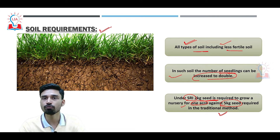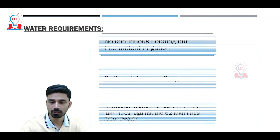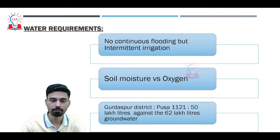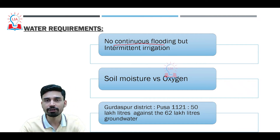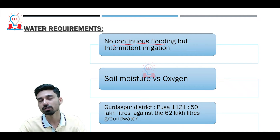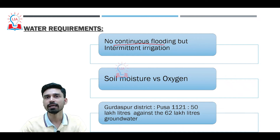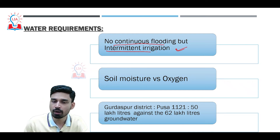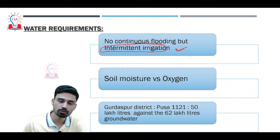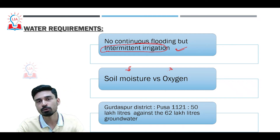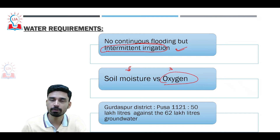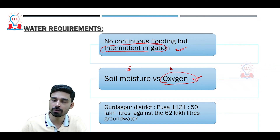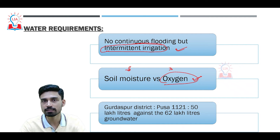The SRI system uses 15 to 20 percent less water because conventional farming requires continuously flooding the field — before transplantation, for 35 to 40 days after transplantation, and then weekly. In SRI, irrigation is required only on an intermittent basis. The method maintains a balance between soil moisture and oxygen requirements, because if the field is completely flooded, the roots cannot absorb sufficient oxygen, which stifles the plant.